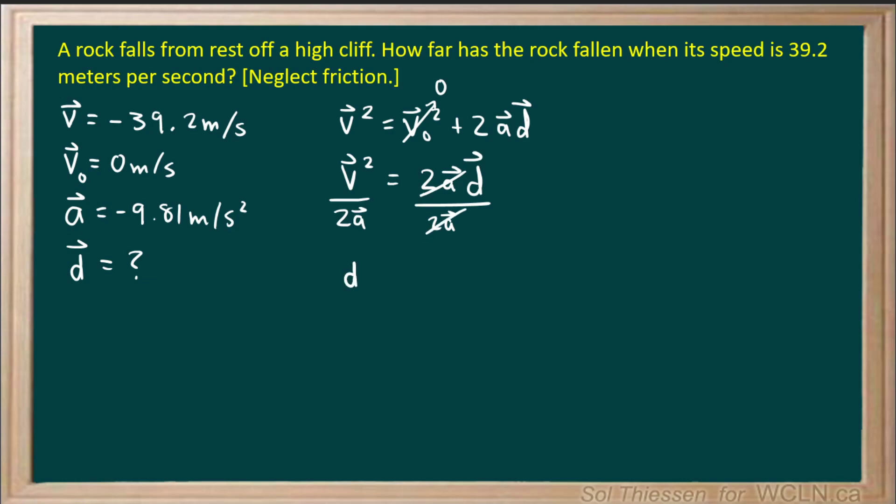To get displacement on its own, so we'll have displacement is equal to final velocity squared, which is negative 39.2 meters per second squared, divided by two times acceleration, so two times negative 9.81 meters per second squared.